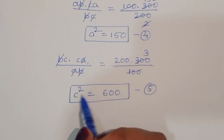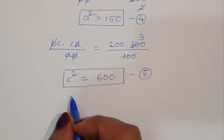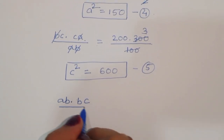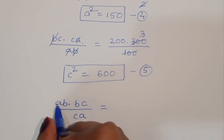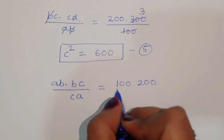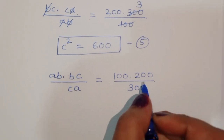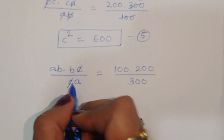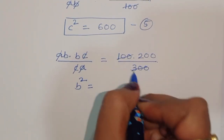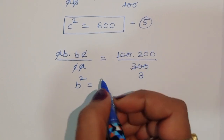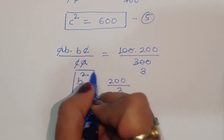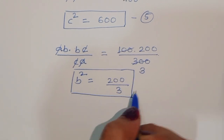We have found A squared and C squared; next we need B squared. For B squared, we can use AB times BC divided by CA. AB is 100, BC is 200, CA is 300. Here C cancels from C and A cancels from A, so we get B squared. B squared is equal to 100 times 200 divided by 300, which gives us 200 divided by 3. This is equation number 6. In this way we have A squared, B squared, and C squared.